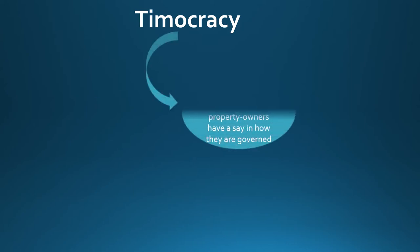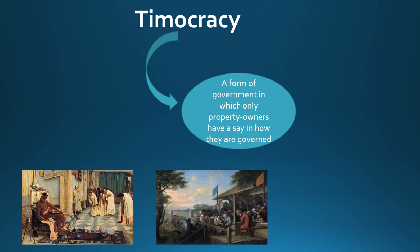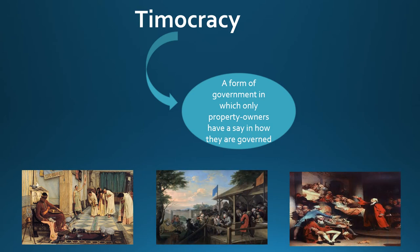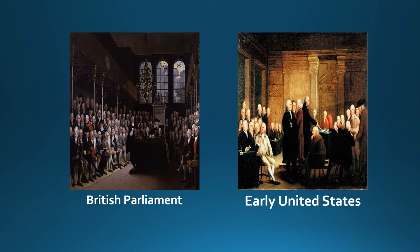A timocracy is a form of government similar to a plutocracy, but in which only property owners have a say in how they are governed. Under this system, only those who own a certain amount of property or land are legally allowed to participate in the political process. Examples were the British Parliament before 1918, where only men holding a certain amount of land could vote or stand for a seat, and the early United States, where most states required men to possess a certain amount of land to vote until the early 1800s.